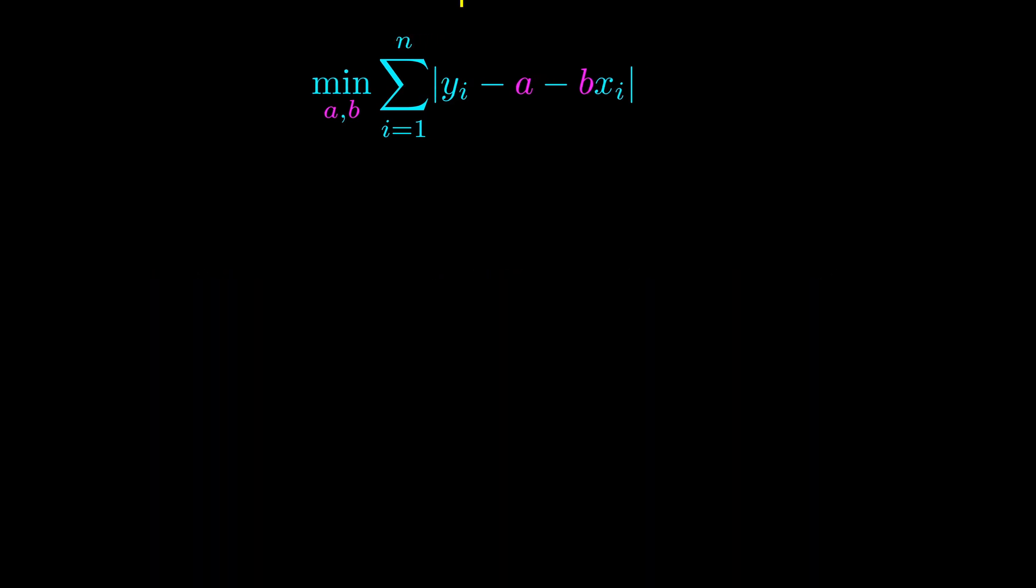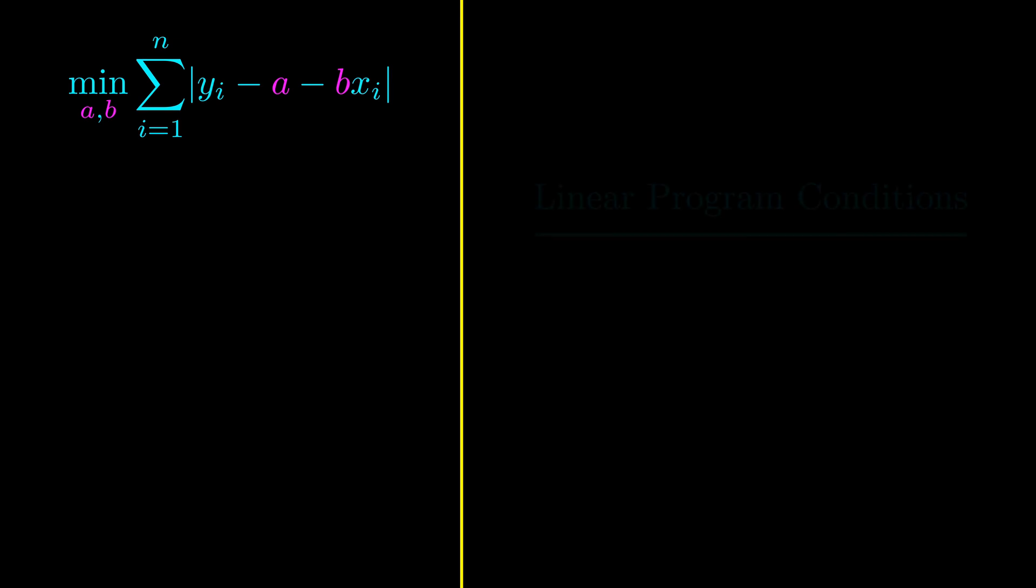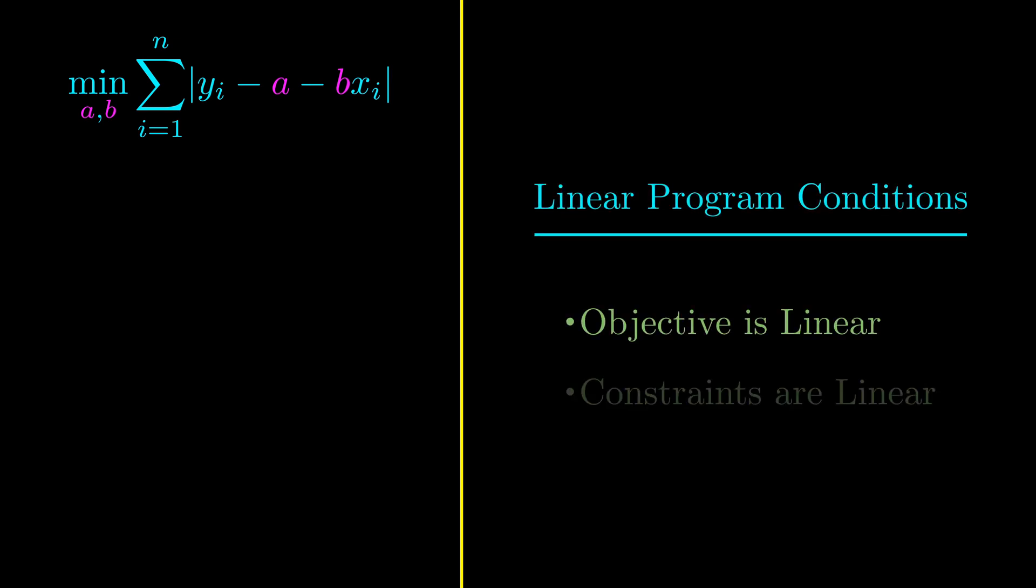Apparently, this is not a linear program. A linear program has to have a linear objective function and linear constraints. The objective is currently not linear because of the absolute value signs. The first trick we use is to linearize the objective by defining new variables ei. ei is equal to each of these absolute value terms. We include this as a constraint. Then, the objective becomes minimize the sum of ei, which is linear.